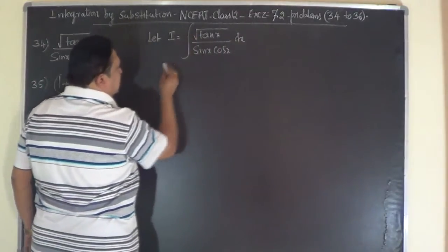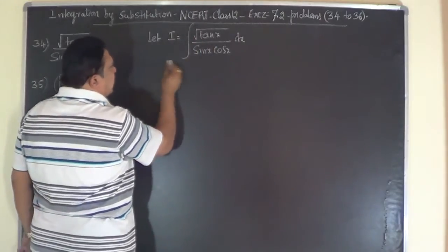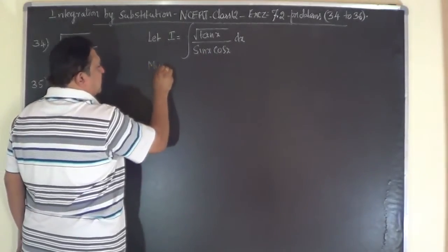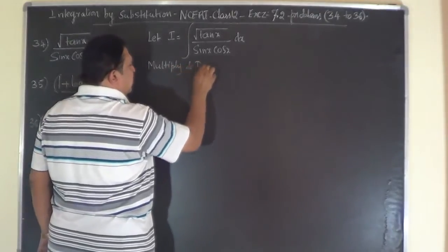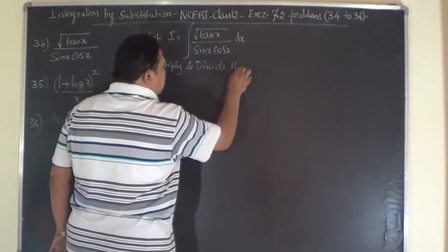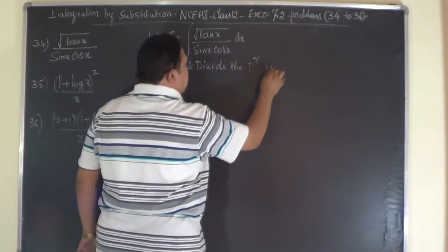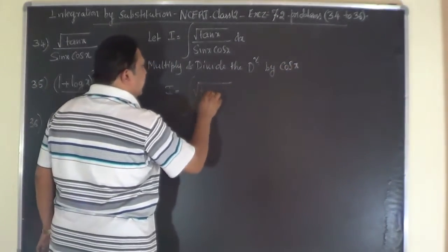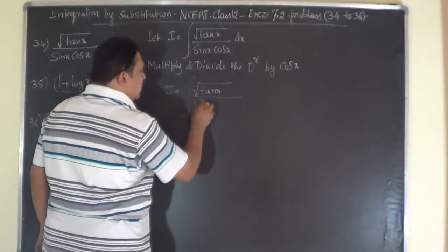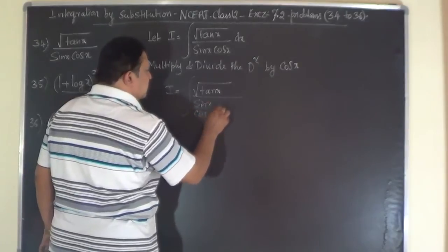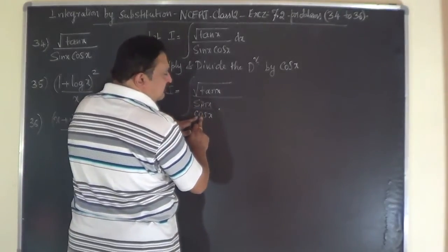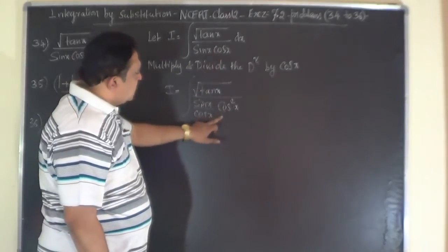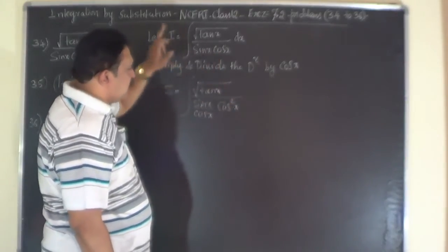Usually if sin x and cos x are present in the denominator and the numerator is tan x, it is better to multiply and divide the denominator by cos x. So multiply and divide by cos x — this allows us to cancel cos x and recover the sin x cos x term.